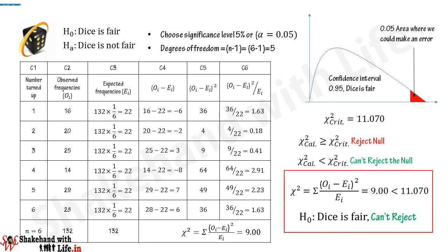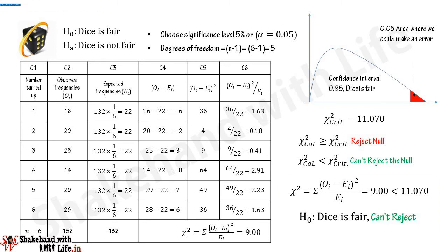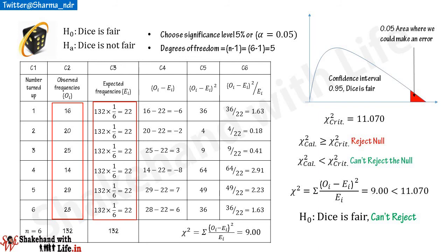Therefore we can conclude that the dice is fair — it is not cheated, pre-loaded, or biased in any way. The variation in the observed frequency distribution is just by chance, and the expected frequency distribution is a good fit to the observed frequency distribution.